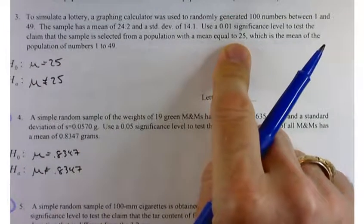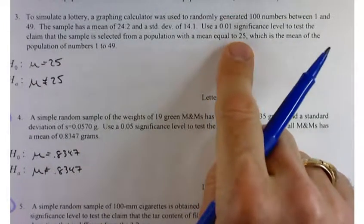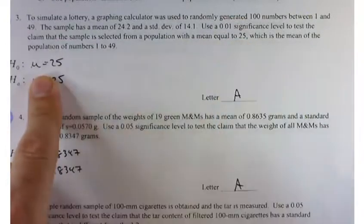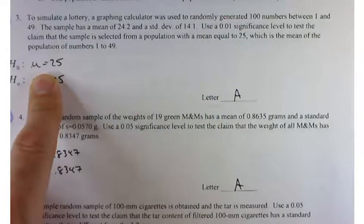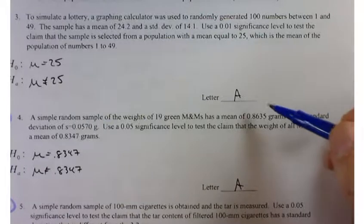You're going to test this against the claim that it came from a population with a mean of 25. So there's one sample, and you're testing a mean. So that's just a one population mean.